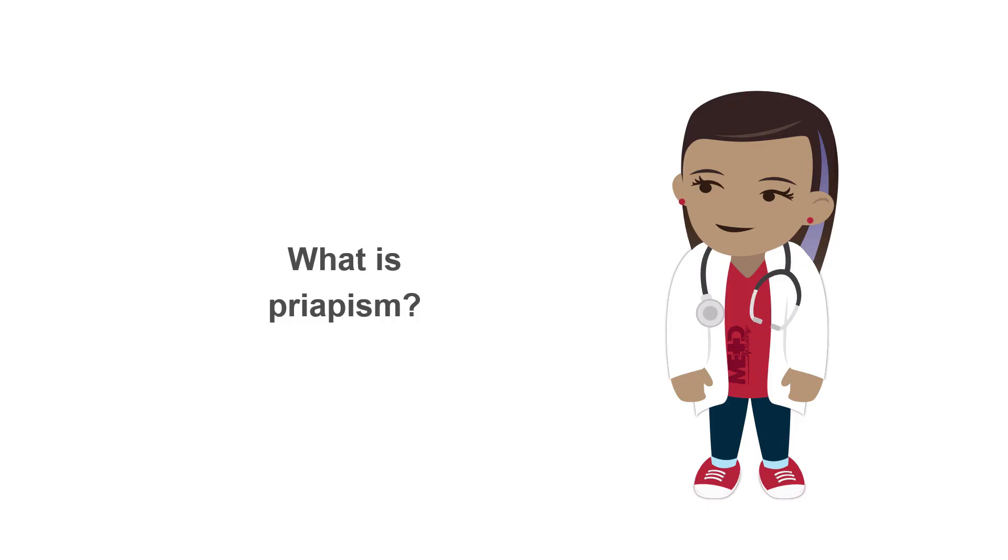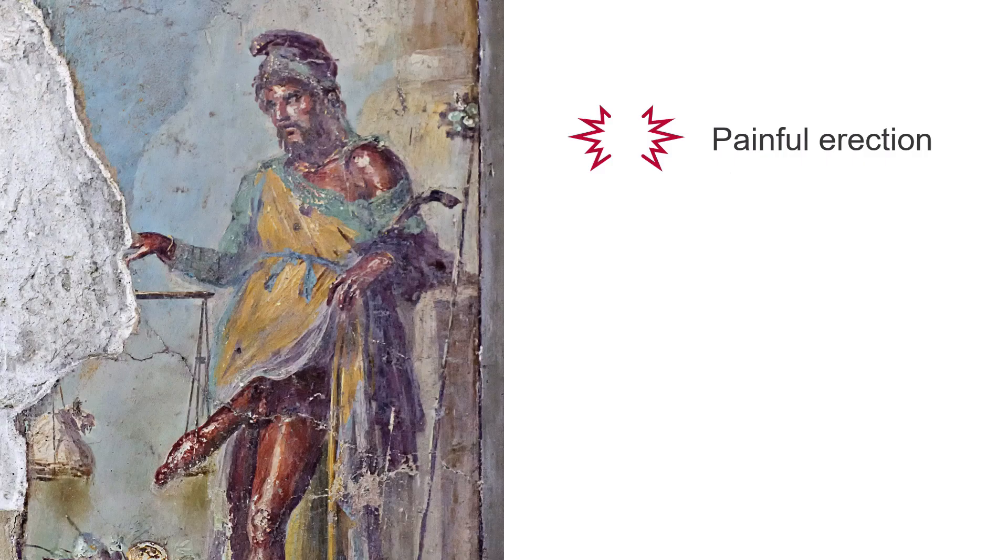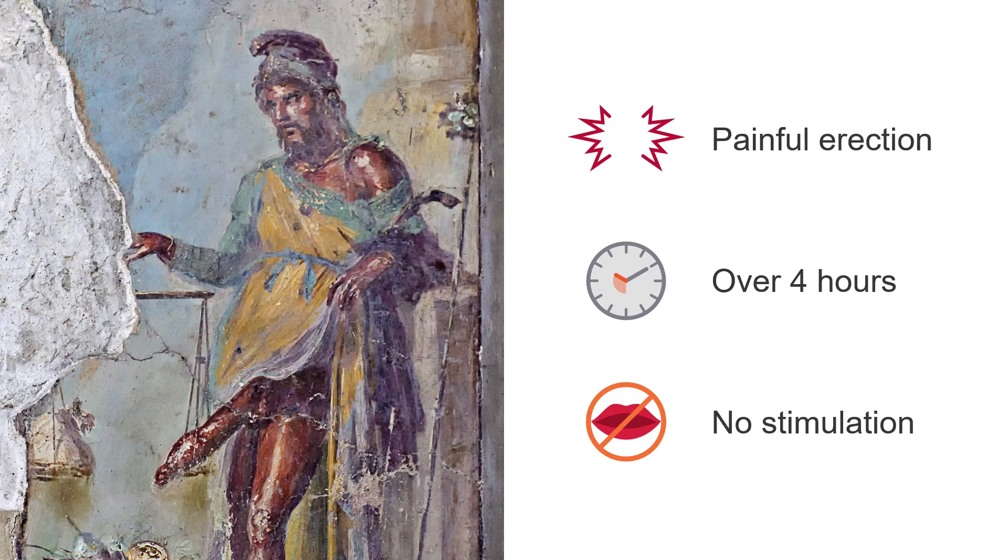So, what is priapism? Priapism is a prolonged penis erection lasting over 4 hours in the absence of sexual stimulation. It's named after Priapus, god of fertility in Greek mythology.